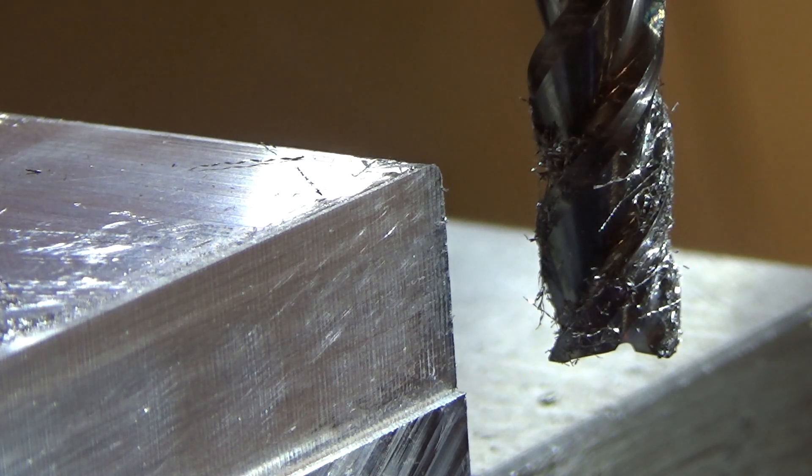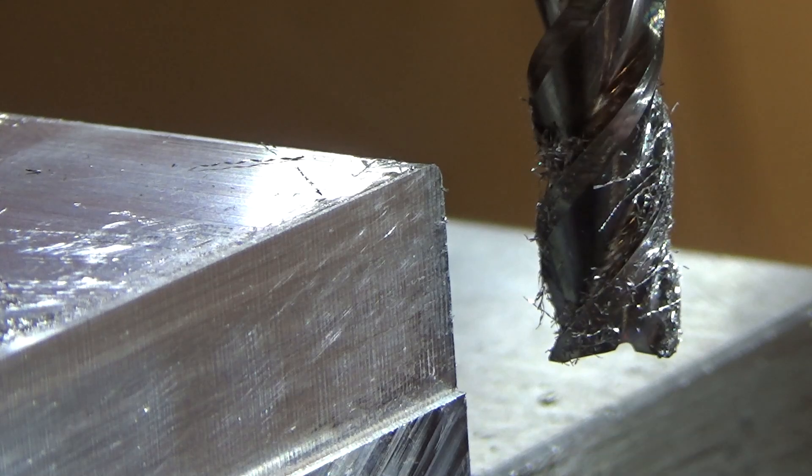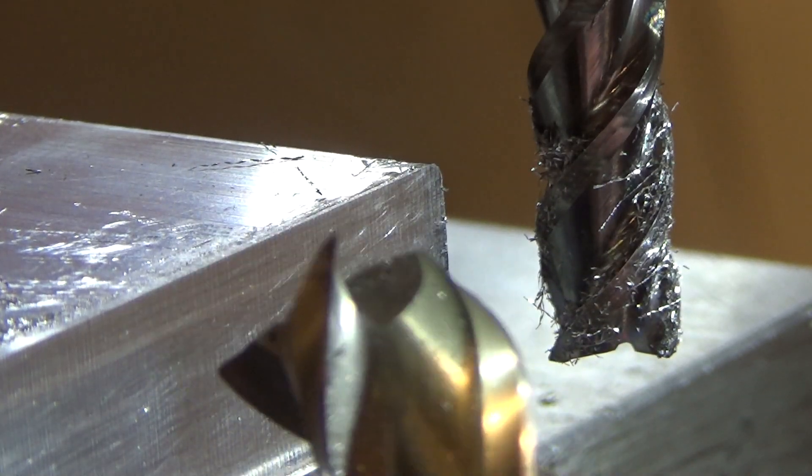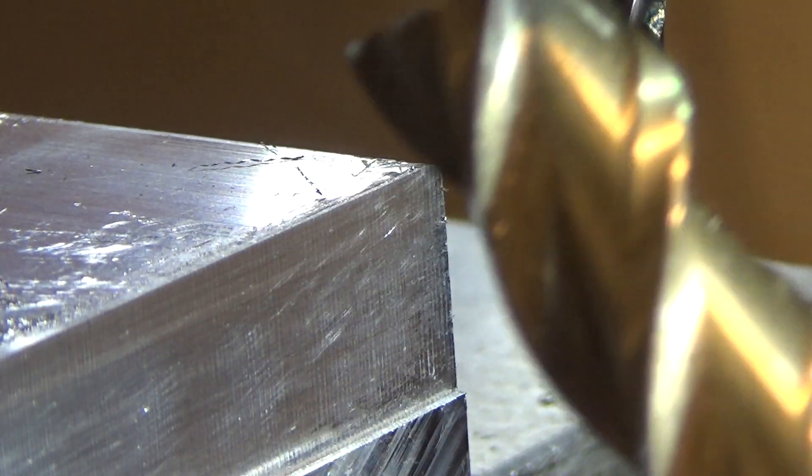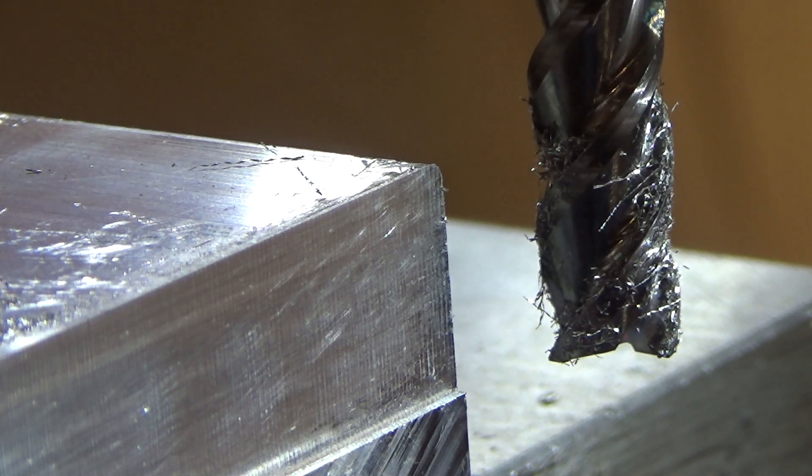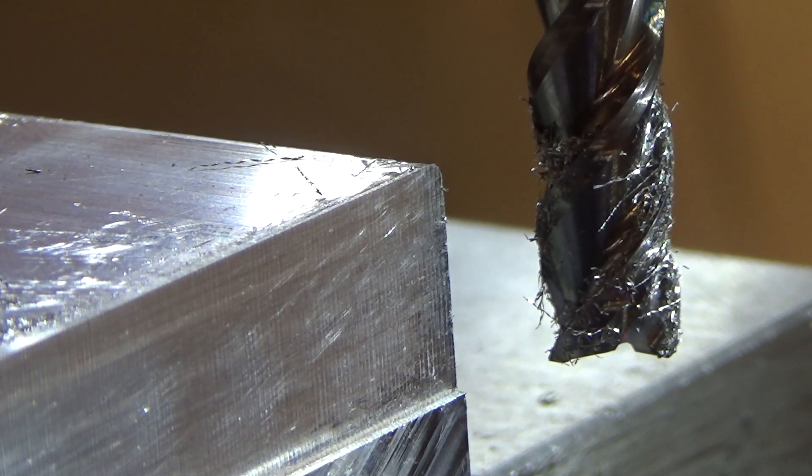So the normal end mills I've been using are like this Promax, which are zircon nitride coated, and it helps prevent welding so you can push them faster. But I haven't really run into that. It doesn't look like I got much welding on this guy either. So the cut is pretty good and smooth.